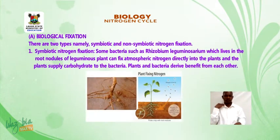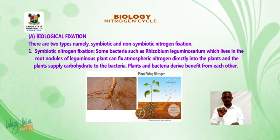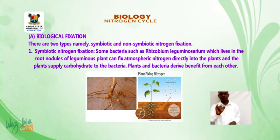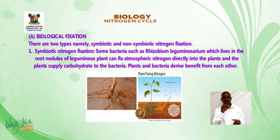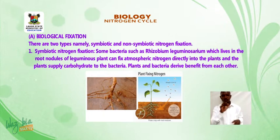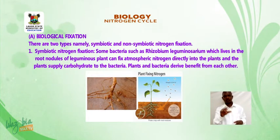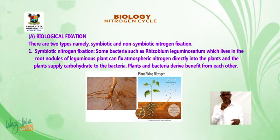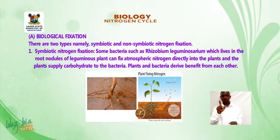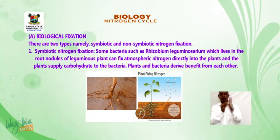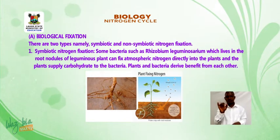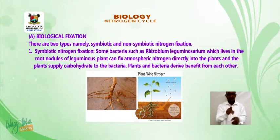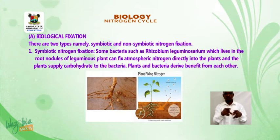Biological fixation. There are two types: symbiotic and non-symbiotic nitrogen fixation. For symbiotic nitrogen fixation, some bacteria such as Rhizobium leguminosarum, which lives in the root nodules of leguminous plants, can fix atmospheric nitrogen directly into the plants, and the plants supply carbohydrates to the bacteria. Both plants and bacteria derive benefits from each other.